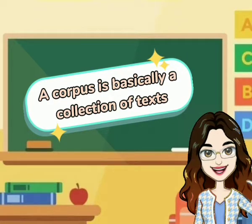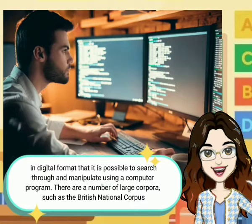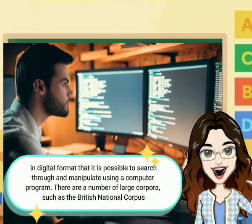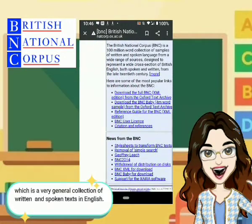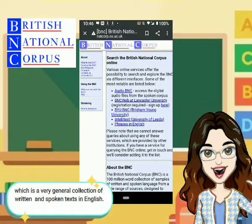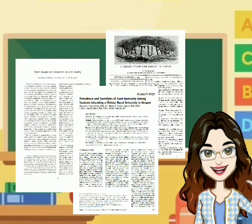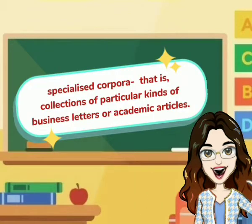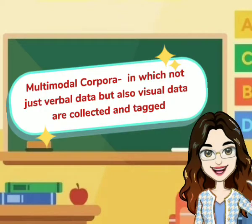A corpus is basically a collection of texts in digital format that is possible to search through and manipulate using a computer program. There are a number of large corpora such as the British National Corpus, which is a very general collection of written and spoken texts in English. You can also find general corpora of texts produced in different varieties of English and other languages. There are also specialized corpora available, such as collections of particular kinds of business letters or academic articles. There are even multimodal corpora in which not just verbal data but also visual data are collected and tagged.